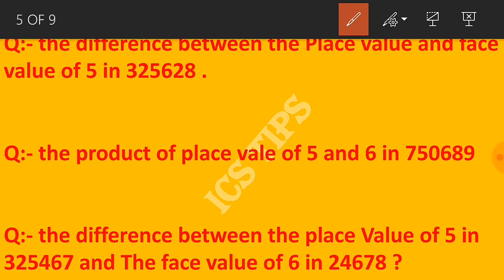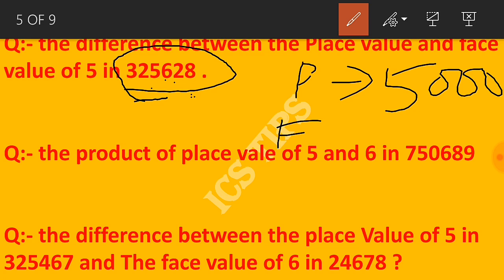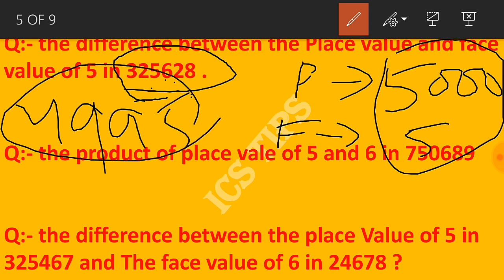Question: Find the difference between the place value and face value of 5 in 325,648. The place value of 5 is 5,000 and the face value is 5.